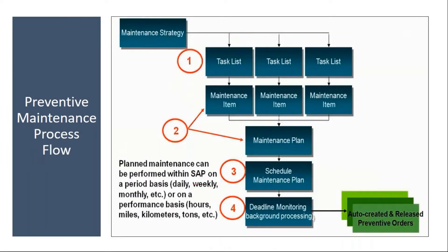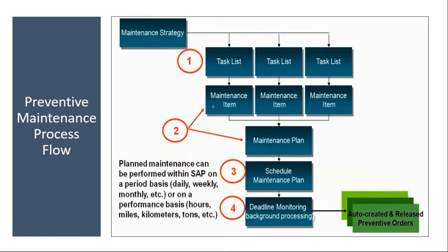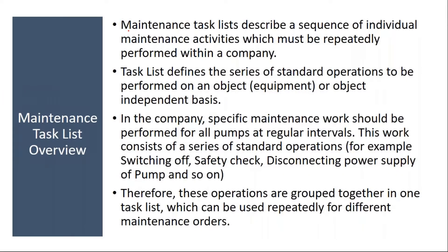In the preventive maintenance process flow we created in the previous session, we created the maintenance strategy. After the maintenance strategy, we need to create the task list. In the maintenance strategy, we just define the cycles and packages. But during preventive maintenance, what tasks you need to perform — those are entered in the task list.